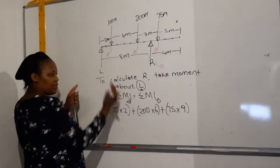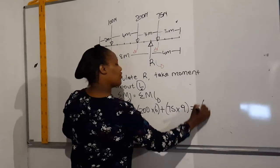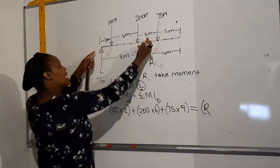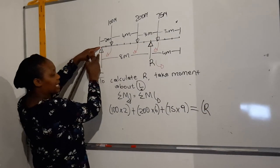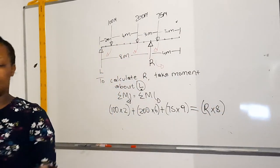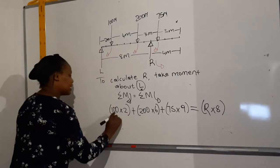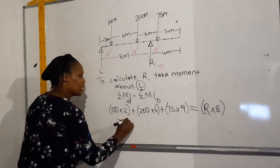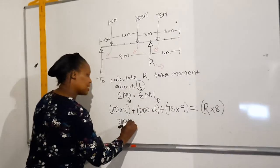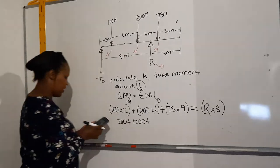Then you've done with the clockwise. You go over the equal sign. Anti-clockwise, you have force R. You say, how far is force R from L? It's 8 meters. So it's going to be R times 8. Then we do the math. 100 times 2 is 200. 200 times 6 is 1200. 75 times 9, it's going to be 675. That's equal to 8 times R, which is 8R.